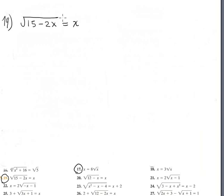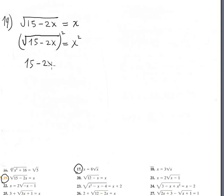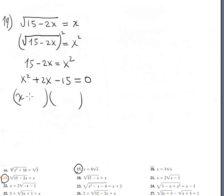Number 19: copy the equation — square root of (15 minus 2x) equals x. Squaring both sides gives 15 minus 2x equals x squared. In standard form: x squared plus 2x minus 15 equals 0. Factoring with the combination 5 and 3 (since 5 times 3 is 15 and 5 minus 3 is 2, with different signs), the bigger is positive. Solutions are x equals negative 5 and x equals positive 3. Both must be checked.